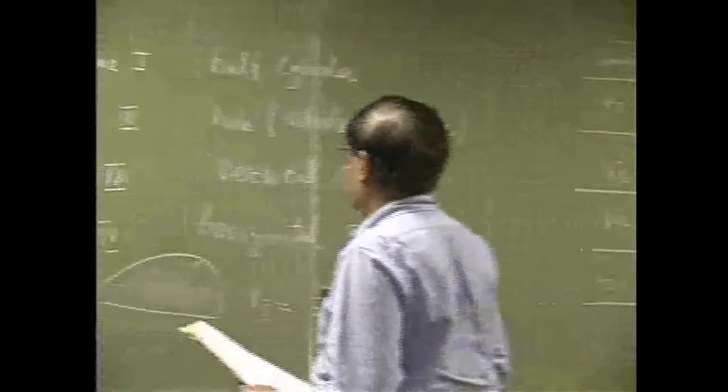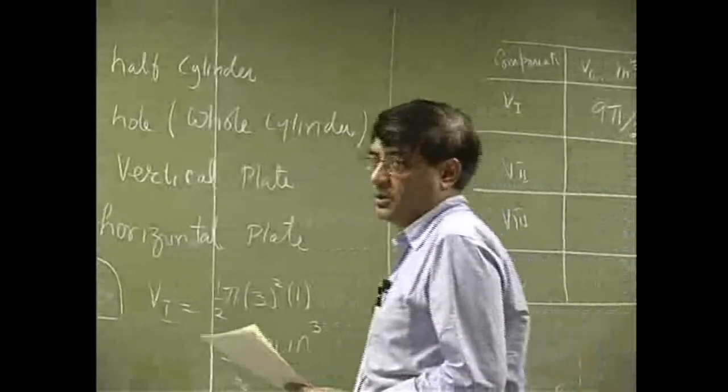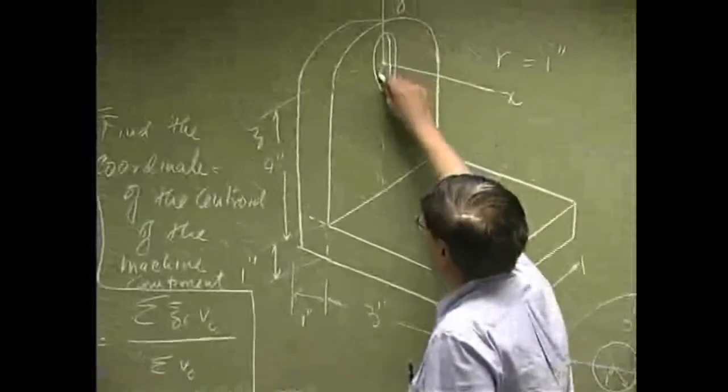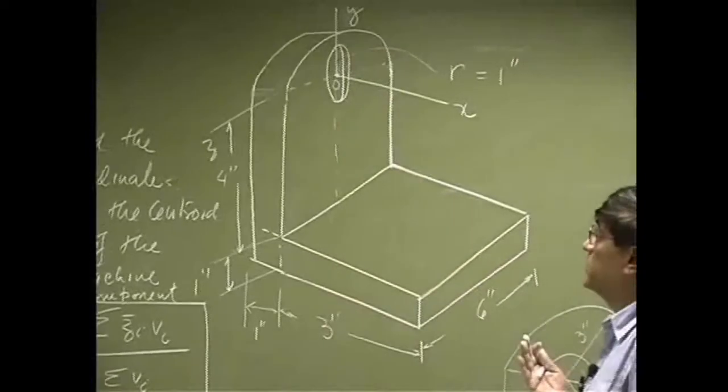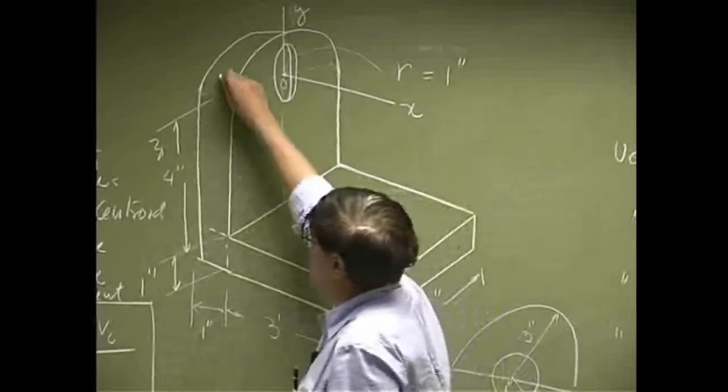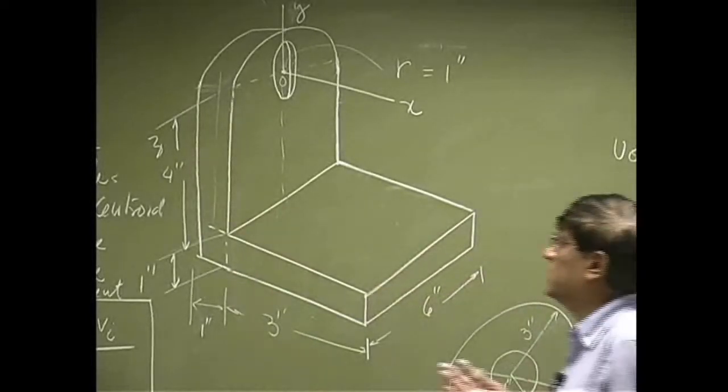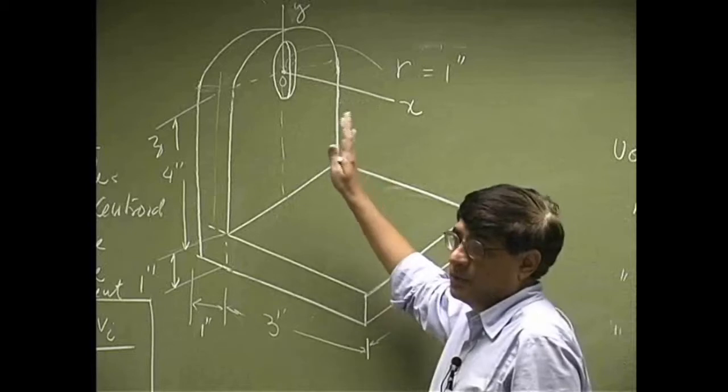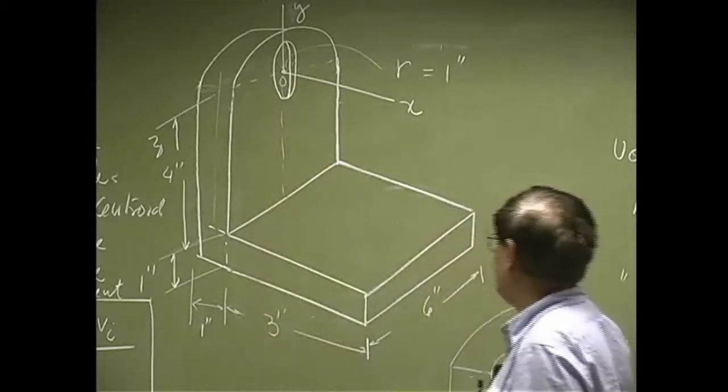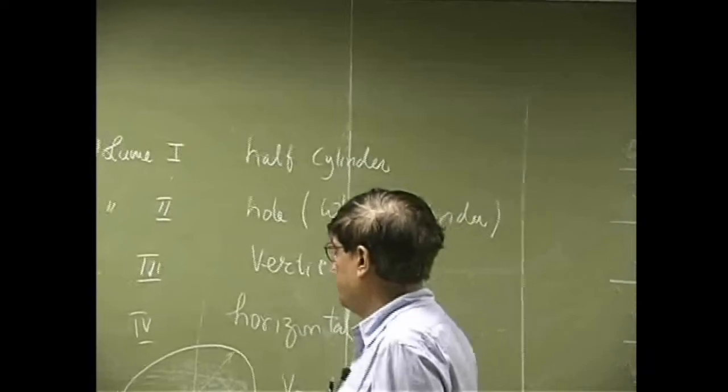That was volume one. Then if I need this centroid, now the origin is at 0,0 and 0,0 doesn't sit on the front surface, doesn't sit on the back surface, it sits right at the center line of that plate. So it's really about 0.5 behind the front surface.